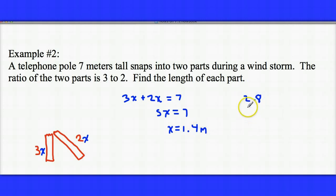That's 1.4 doubled. And then 1.4 tripled would be 5.2. So those are in a ratio of 3 to 2, and notice that when we add these together, we get a sum of 7 meters.